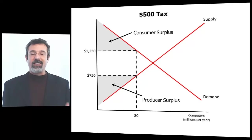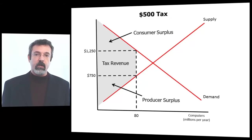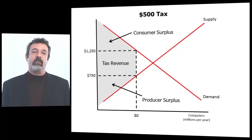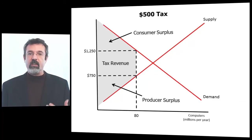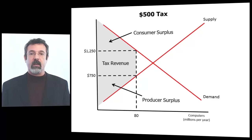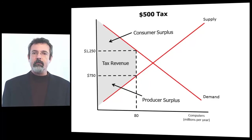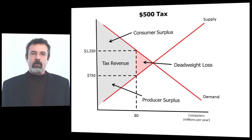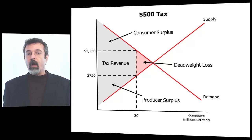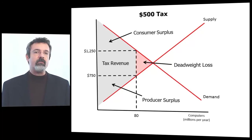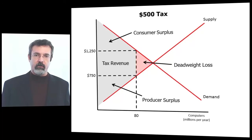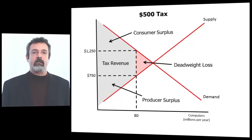But in this scenario, consumers and producers aren't the only players — the government is also present. The government obtains a tax revenue of $500 per computer times the 80 million computers that are sold. This tax revenue is also a benefit generated for society from the market. So the total benefit to society is the consumer surplus plus the producer surplus plus the government's tax revenue. And notice there's a section missing — we call this the deadweight loss.